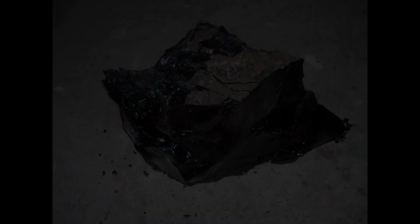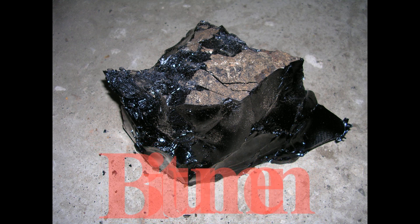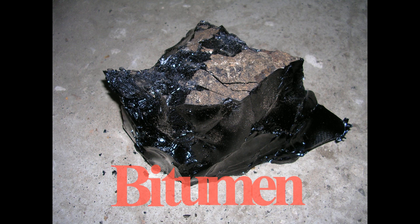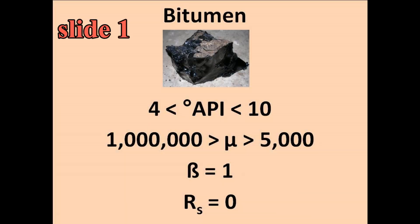We'll start with the heaviest hydrocarbon fluid, called bitumen. Now, using what we learned in the definition section, let's examine the characteristics of bitumen. What do we see in slide one? Looking at its API gravity, we notice that it is very low. Remember that the API gravity for water is 10 degrees, so if a fluid has an API gravity of less than 10 degrees, we call it bitumen. Since bitumen is heavier than water, it will sink. In fact, bitumen is the only hydrocarbon that will not float in water.